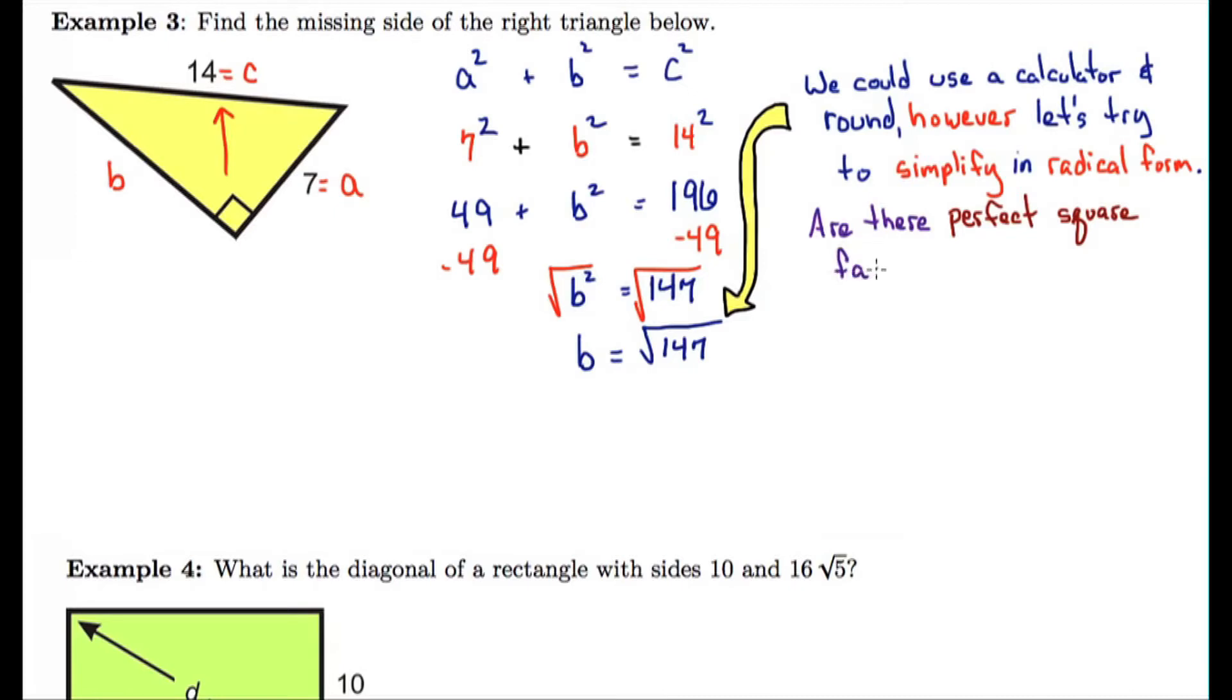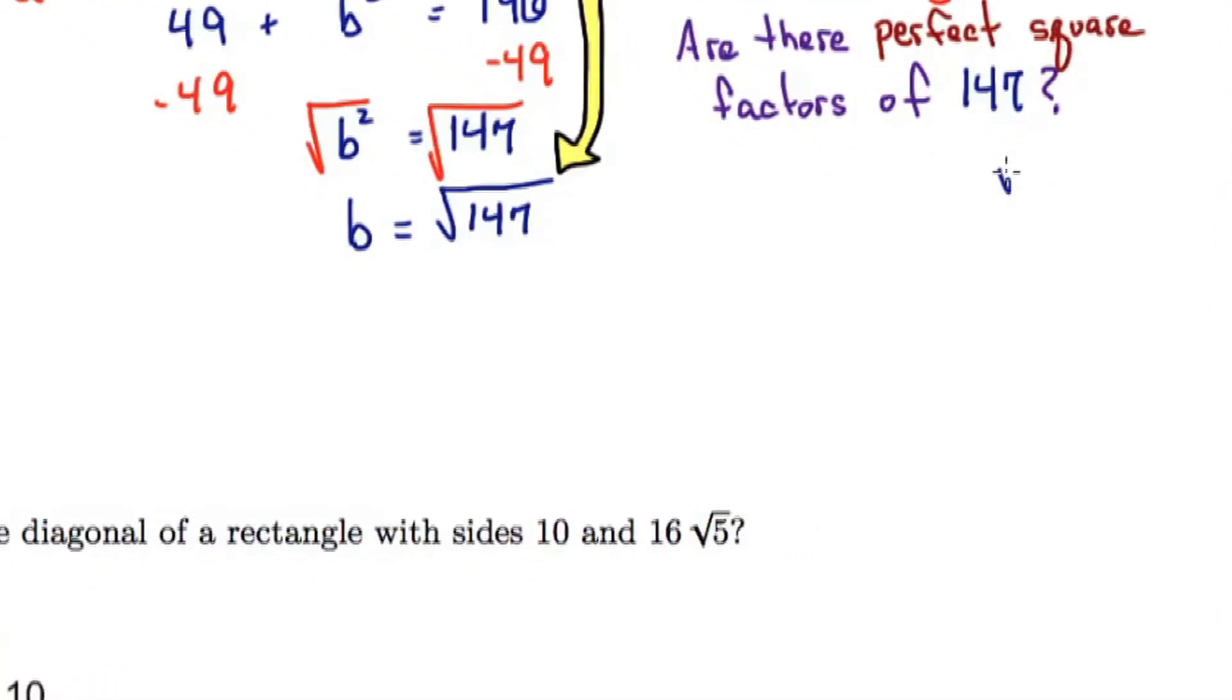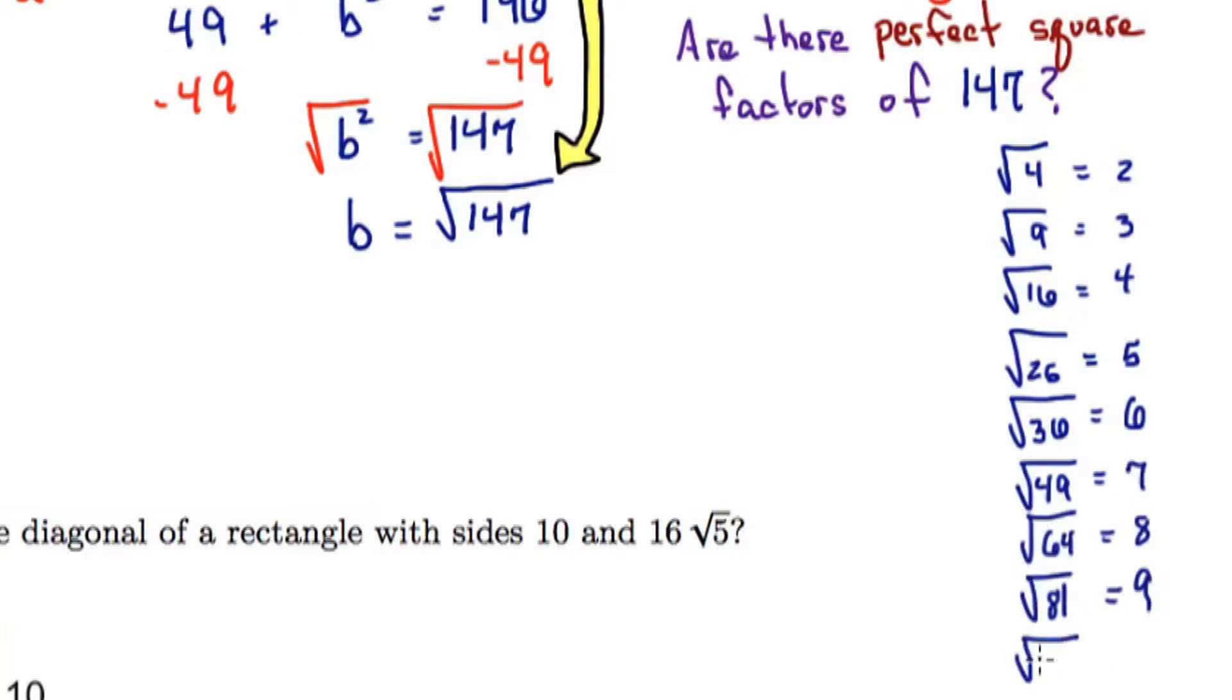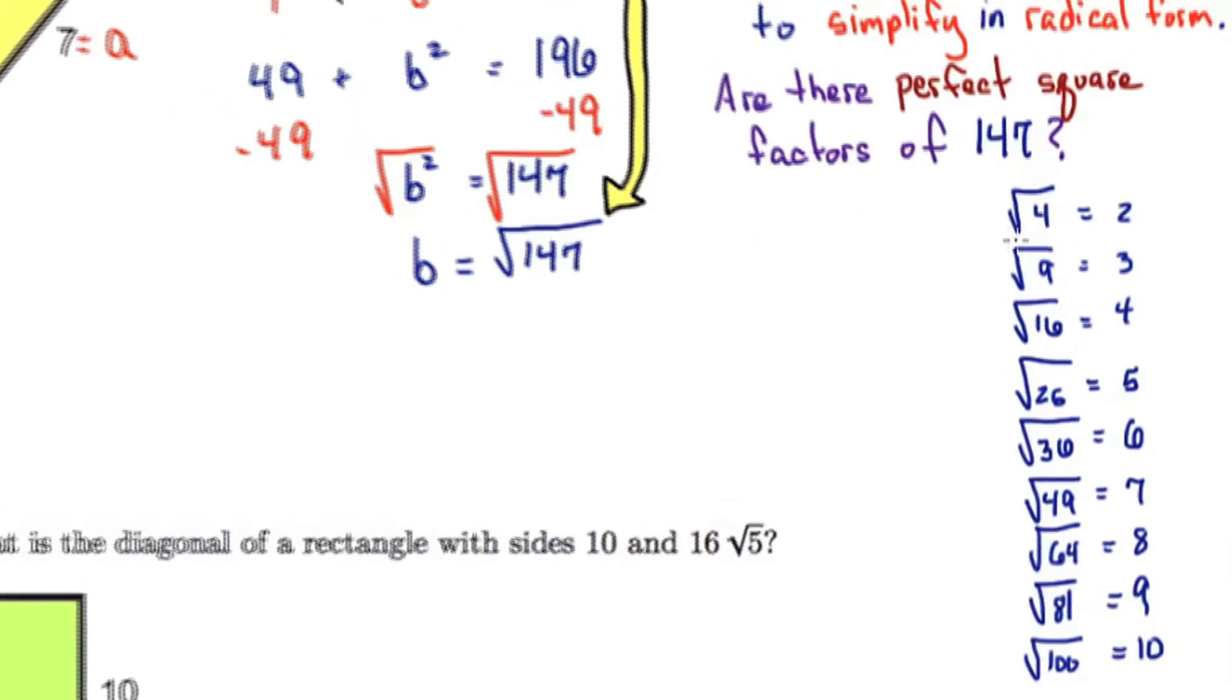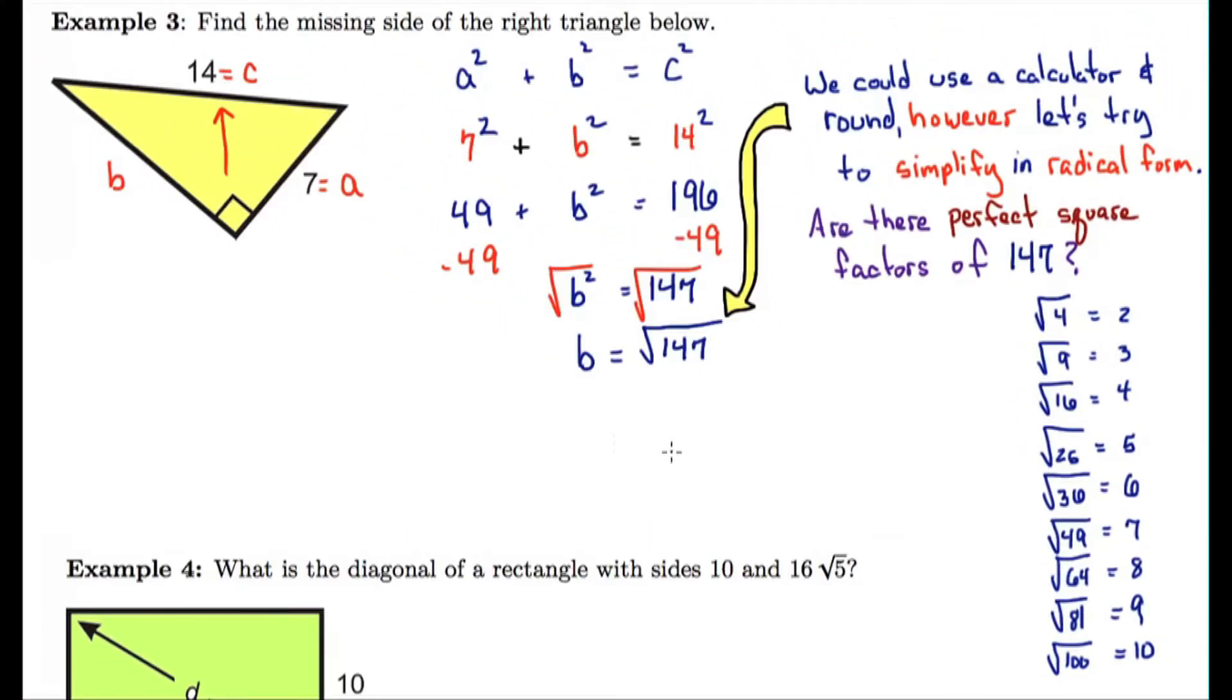So are there any perfect square factors of 147? So here's a short list here of perfect squares. Starting with root 4, square root of 4 would be 2, and root 9 would be 3. And I'm going to do it all the way up to root 100, which would be 10. So the idea is, which one of these would be a factor of 147?